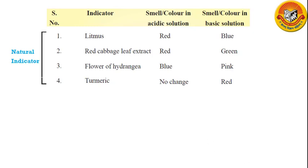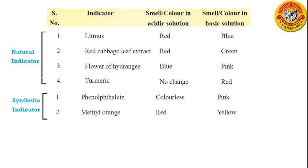Now let us see about synthetic indicators. We are discussing two: phenolphthalein and methyl orange. Phenolphthalein indicator is colorless in acidic solution, but gives pink color when put in basic solution. Similarly, methyl orange gives red color in acidic solution and yellow color in basic solution. The natural color of phenolphthalein is colorless.